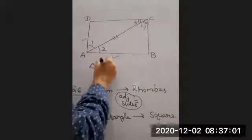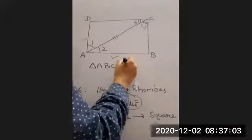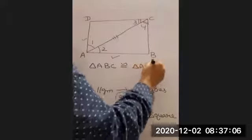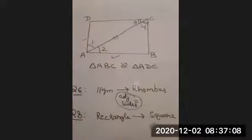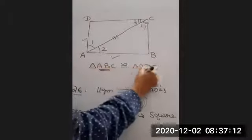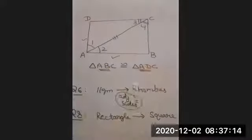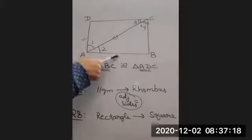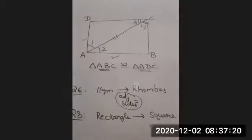So we have triangle ABC congruent to triangle ADC. So when these two triangles are congruent, obviously AB will be equal to AD by CPCT. That is we have a rectangle in which adjacent sides are equal. Hence, it becomes a square.